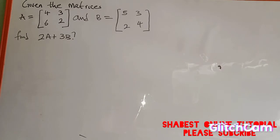Hello good viewers, you are welcome once again to my channel. In today's tutorial, we are going to learn how to provide a solution to this matrix question on the board. The question says: given the matrix A equals 4, 3, 6, and 2, and B is equal to 5, 3, 2, and 4, and we are asked to find 2A plus 3B.